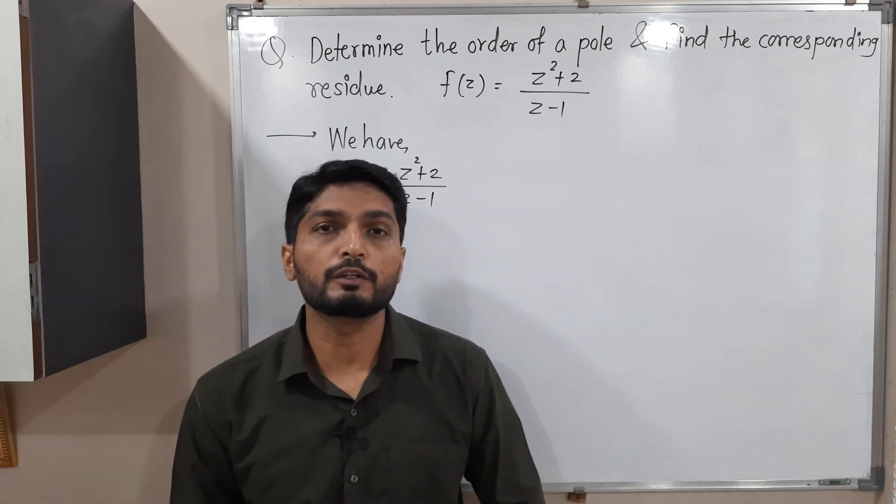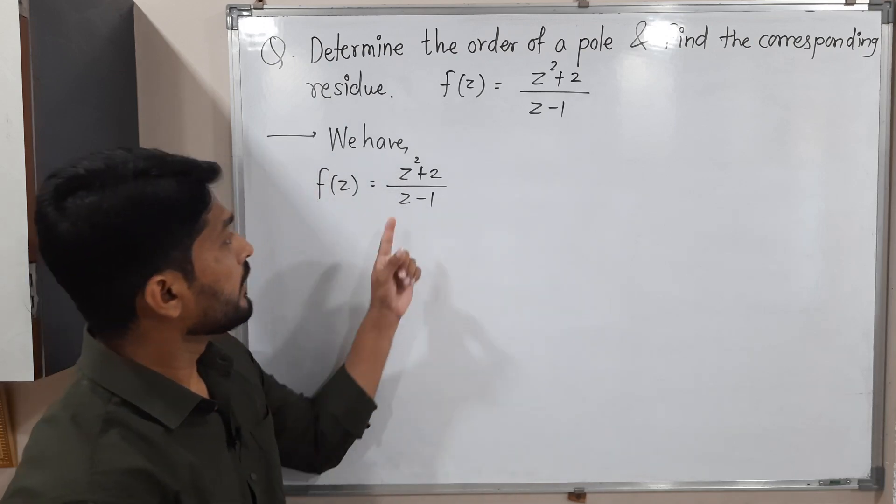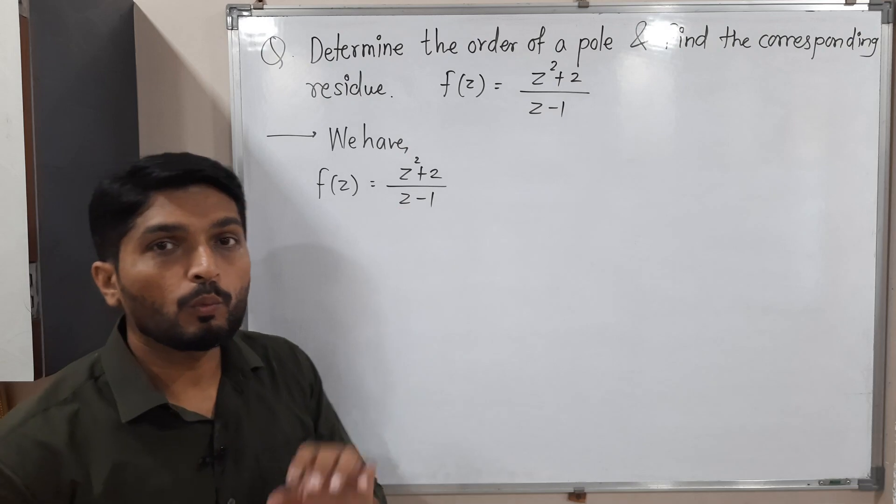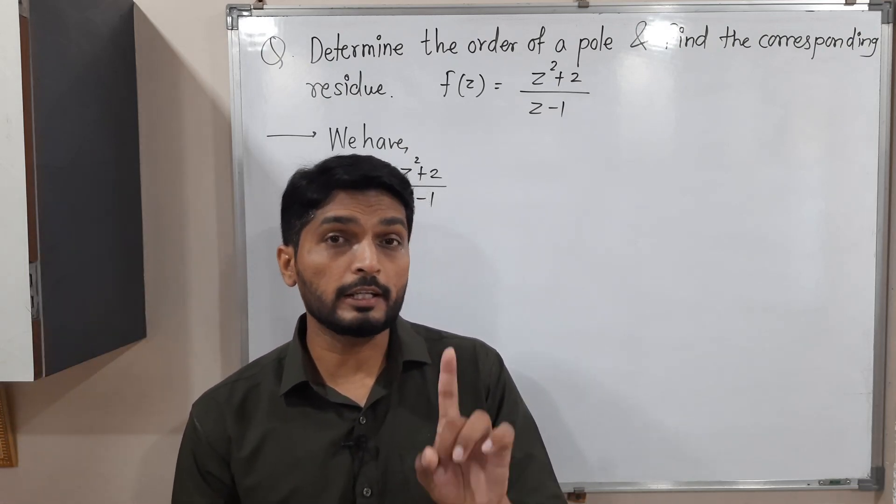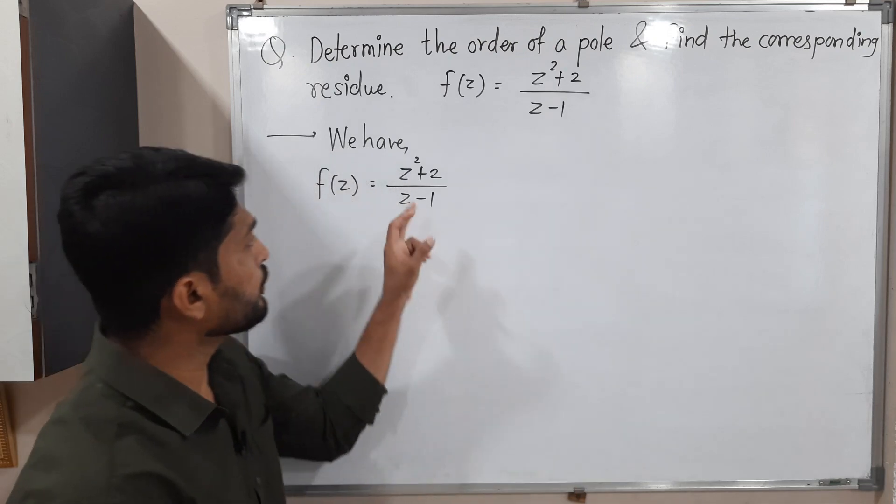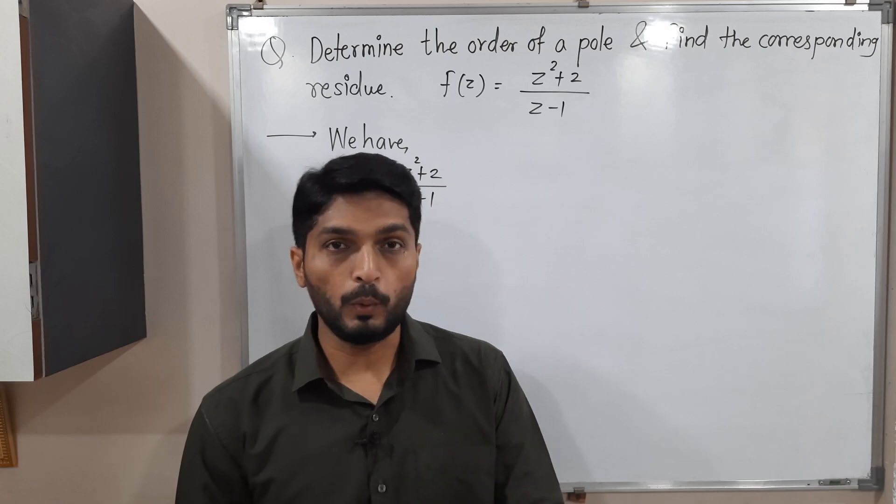For what value of z will the denominator be 0? Yes, 1. If I put z = 1, 1 - 1 = 0. So that means for z = 1, denominator will be 0 and the numerator is non-zero obviously. So z = 1 is a pole.